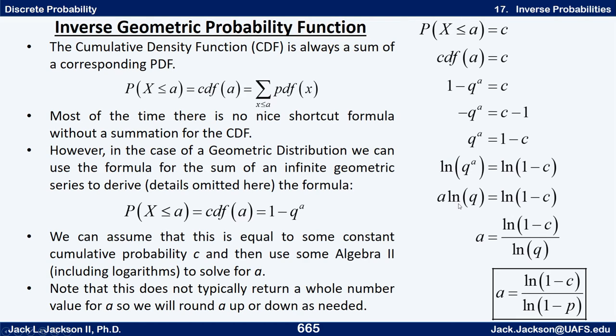That is essentially the same property that says a power to a power is found by multiplying the powers. Now the a is down here where we can get our hands on it. We can divide both sides by the natural logarithm of q to get the a by itself. Of course that means we have to divide the other side by log of q as well. And so now we have a is, we solved for a. A is the natural log of 1 minus C over the natural log of q. Remember q is just 1 minus p.